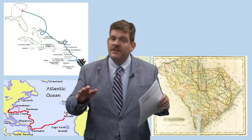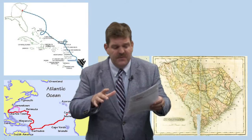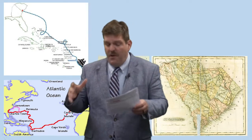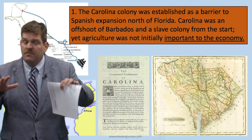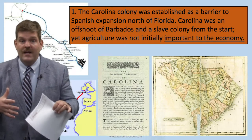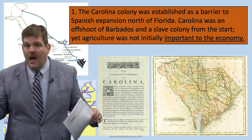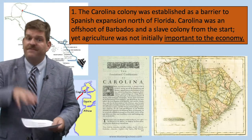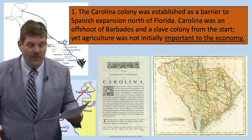Now let's talk about the colony of Carolina. The Carolina colony follows a different historical pattern than the other colonies because it was established as a defensive position — a barrier to prevent the Spanish from expanding north out of Florida. Carolina was an offshoot of the Barbados colony, and it was a slave colony from the start. It wasn't primarily an agricultural colony, a trading colony, or a colony founded for religious reasons or economic diversity. The Carolina colony was a uniquely defensive position, and that gave it a different character. Agriculture wasn't initially important to the economy.